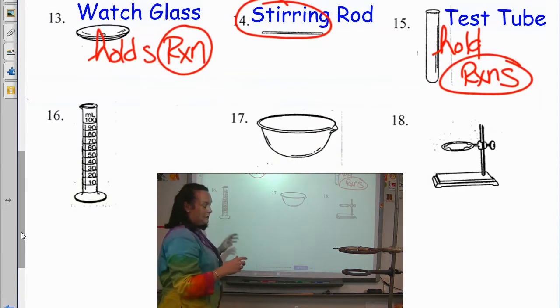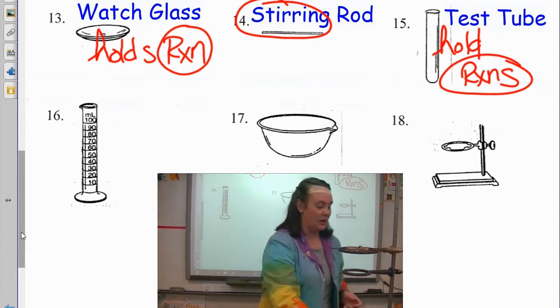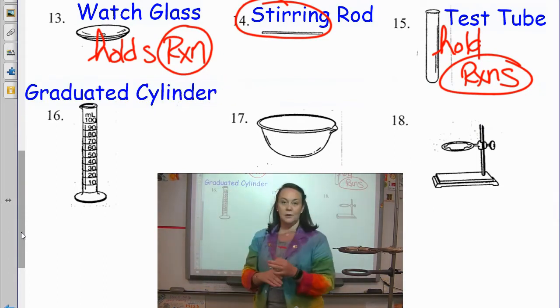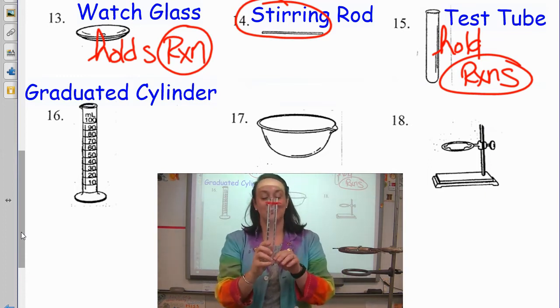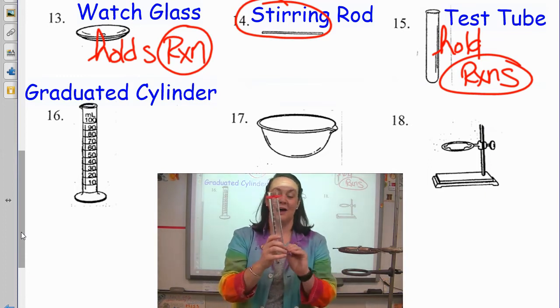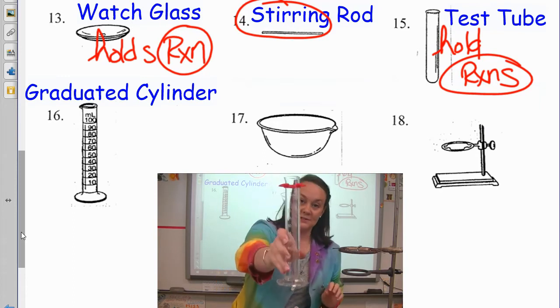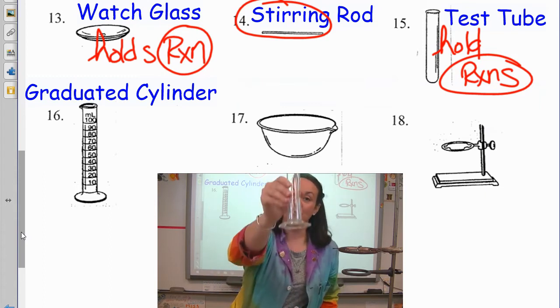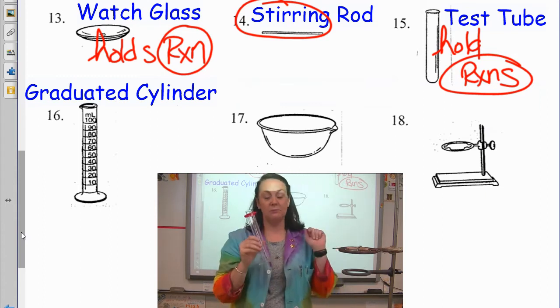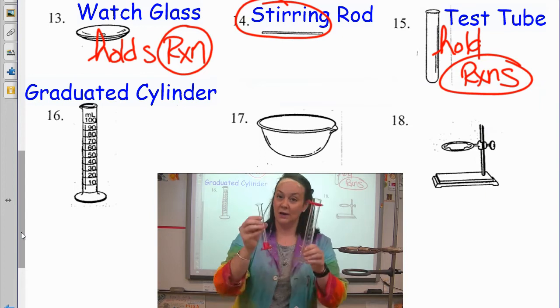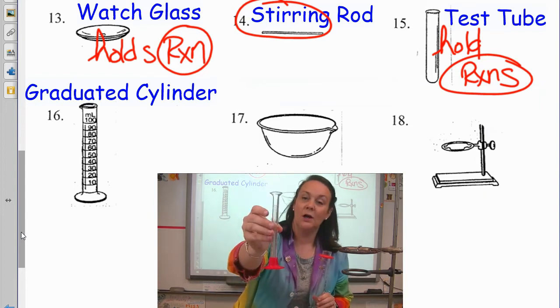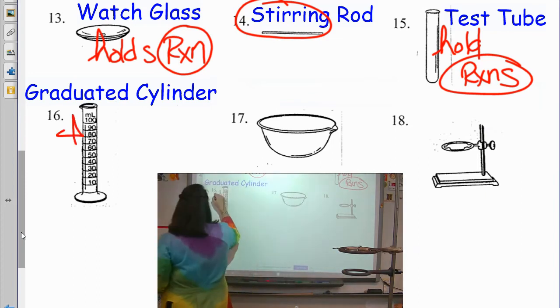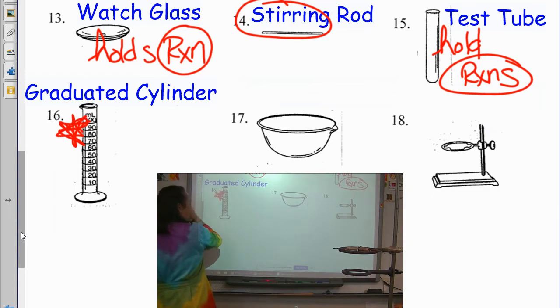16. Hopefully everybody knows what 16 is. It's a very smart cylinder. It is a graduated cylinder. I know I'm hilarious. It's called graduated because it's got graduations on the side. It has the markings. This is the only thing besides the burette that you will use to measure volume in this class. So, if I say, hey, go get 10 milliliters of sodium hydroxide, you are getting a graduated cylinder to measure liquid.